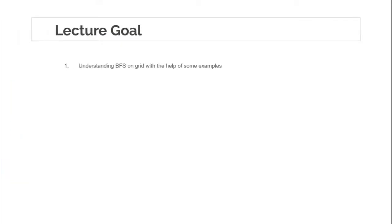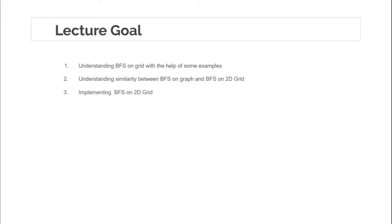So what are the lecture goals? The lecture goals are to understand BFS on 2D grid with the help of some examples, and then we will be looking at the similarities between BFS on a graph and BFS on 2D grid. This is the same as what we did in the previous lecture where we studied DFS on 2D grid — there are many similarities when we apply BFS on a graph and BFS on 2D grid. Finally, we will be implementing the algorithm.